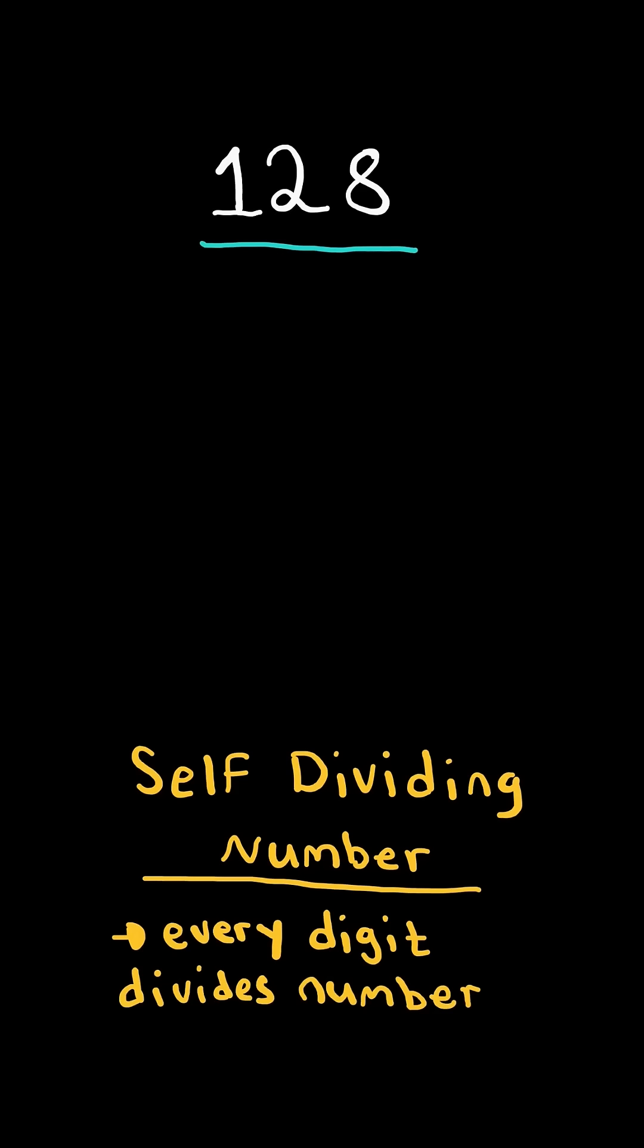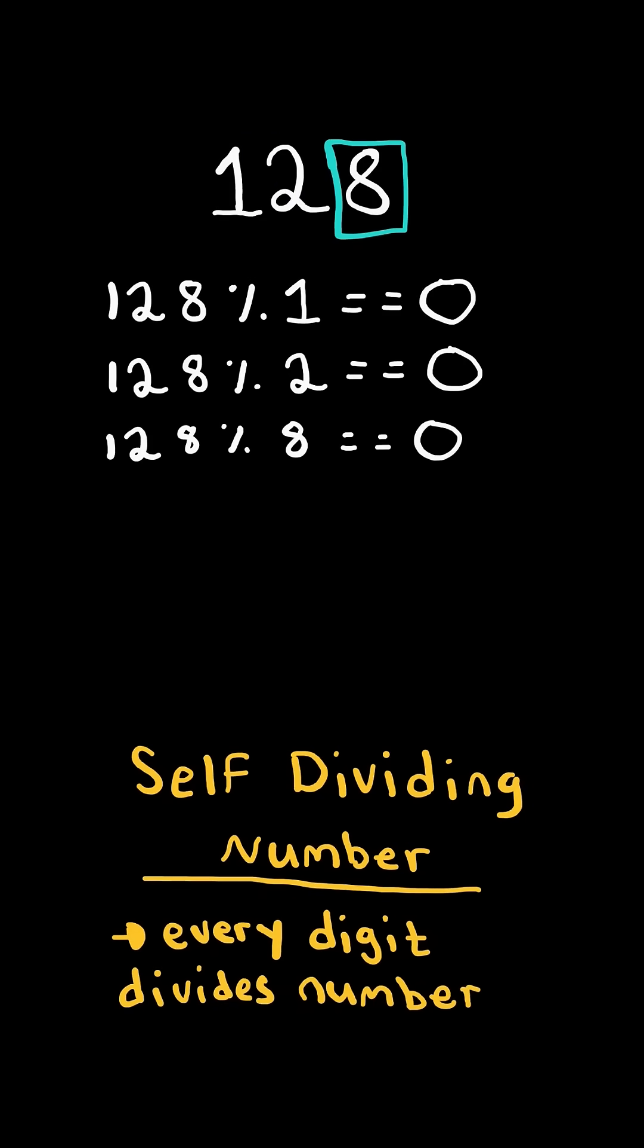Self-dividing numbers. 128 is self-dividing because 1 divides 128, 2 divides 128, and 8 divides 128.